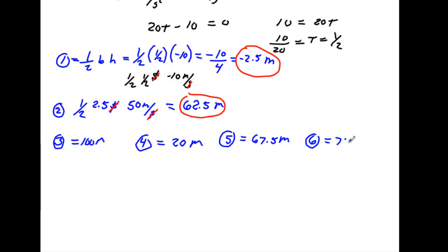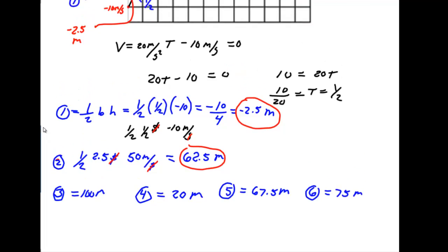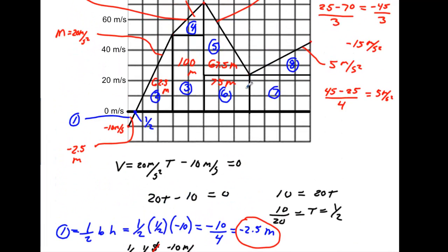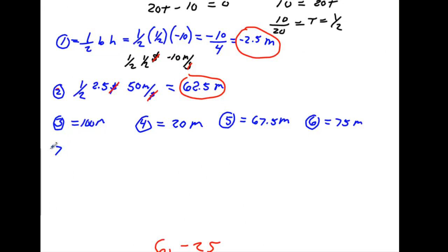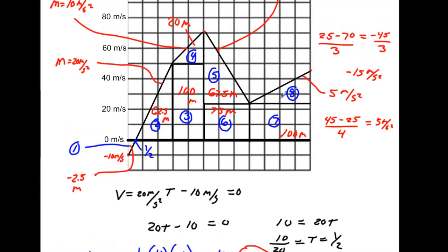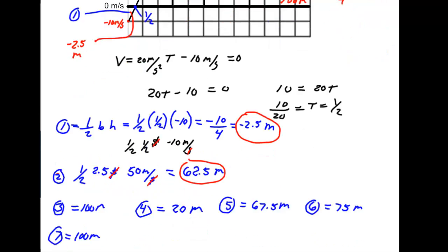This really isn't that hard — you're just breaking the graph into shapes and finding the area. For area 7, we're at 25 going over four seconds, giving 100 meters. For area 8, using one-half base times height: height is 20 m/s over four seconds — 20 times 4 is 80, divided by 2 gives 40 meters. So number eight is 40 meters.